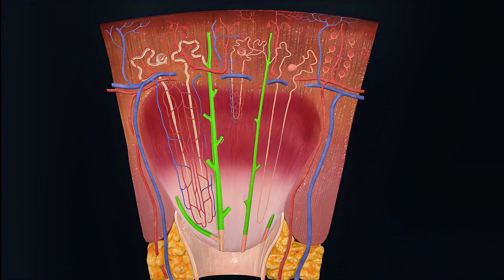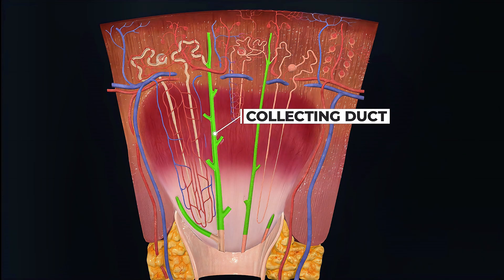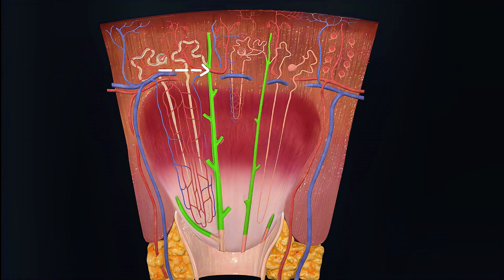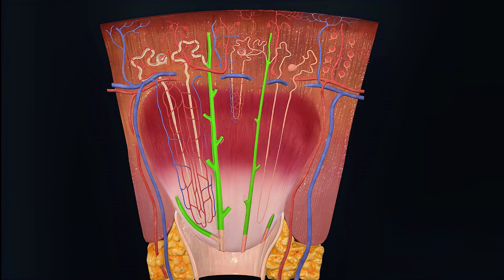Finally, the fourth and last part is called the collecting duct, which starts in the kidney's cortex region, goes through the medulla, and ends in the calyx. The collecting duct is common to many nephrons.